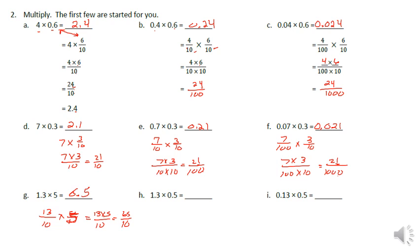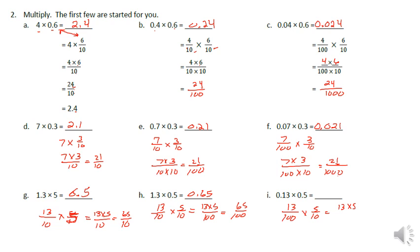For part h: 13 tenths times 5 tenths gives 13 times 5 over 100, which equals 65 hundredths. The 5 goes in the hundredths place, so 0.65. For the last one, it's 13 hundredths times 5 tenths, giving 13 times 5 over 100 times 10, which equals 65 thousandths. The 5 goes in the thousandths place, so 0.065.